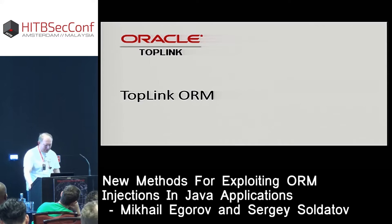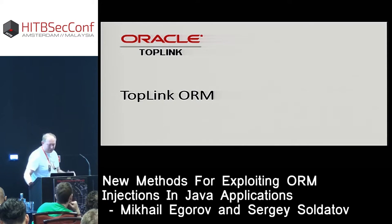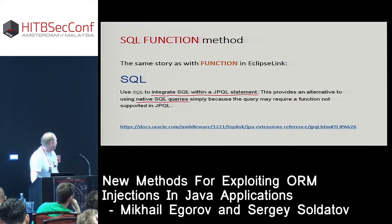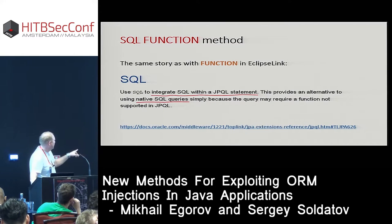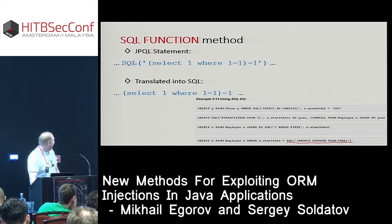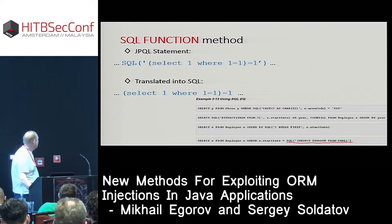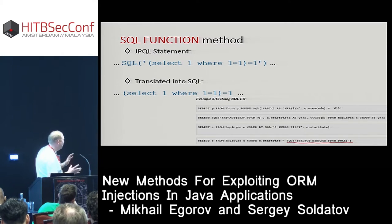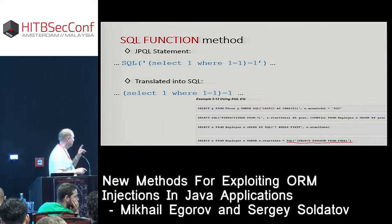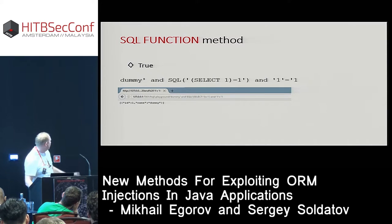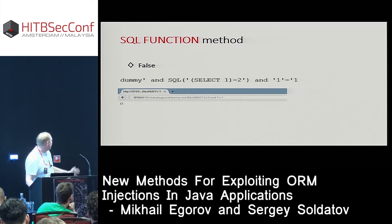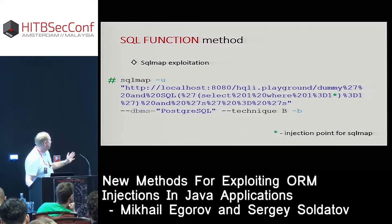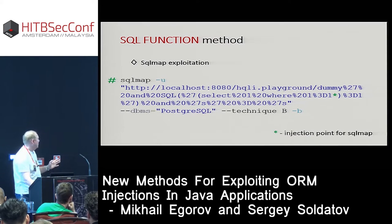The second ORM is TopLink. It's very similar to EclipseLink and has a function with a different name but the same functionality. The documentation actually explains why the SQL function exists. Notably, the documentation for this function is very useful if you want to figure out how to exploit the vulnerability — the vulnerable example is written right into the documentation, including an example of a true expression and a false expression. Exploitation is completely the same, and the technique works for every database management system because it's an ORM feature.